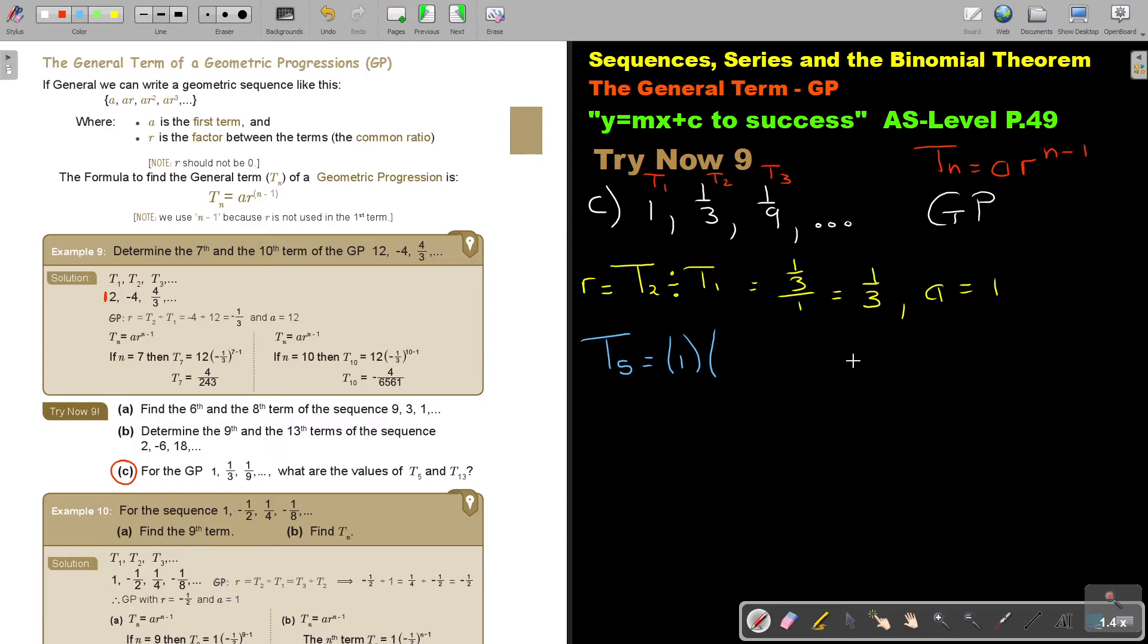R, let's just see what is the value of R. R is 1/3, and then it's 5 minus 1. And that will be 1/3 to the power of 4, and that will give you a final answer of 1 over 81.